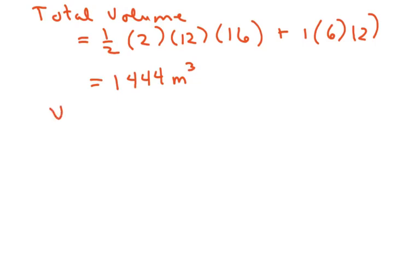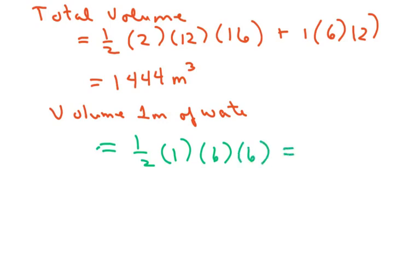Now the volume of 1 meter of water is just going to be 1 half times your 1 times 6 times 6, all right, and that gives you 18 meters cubed.